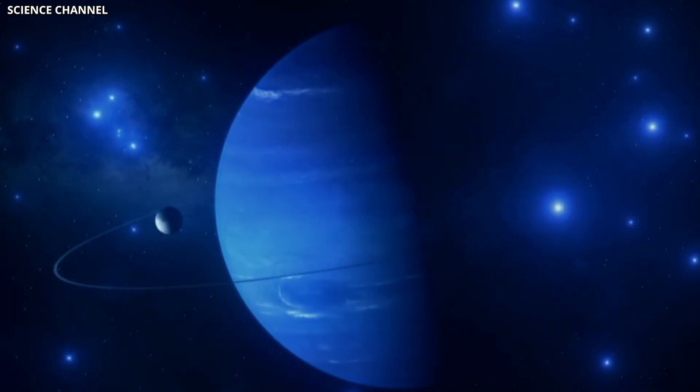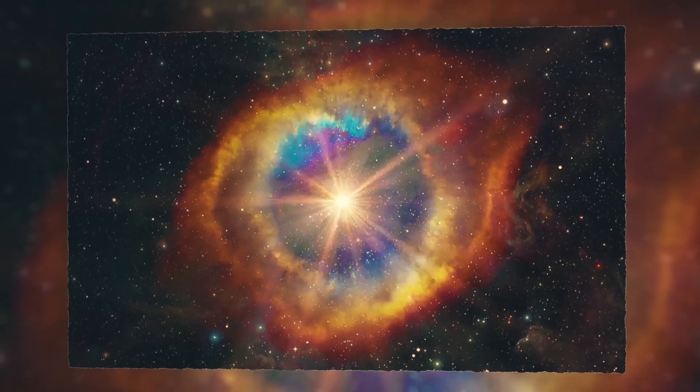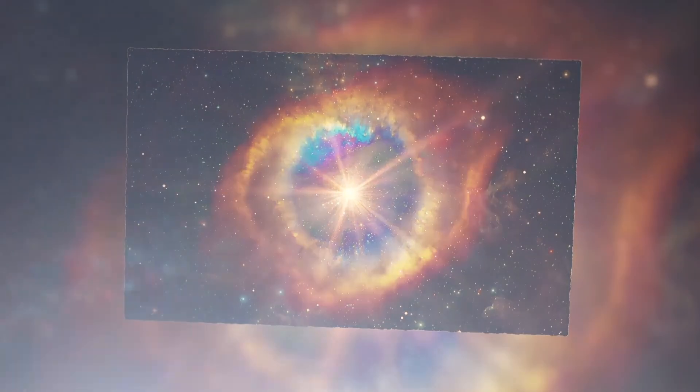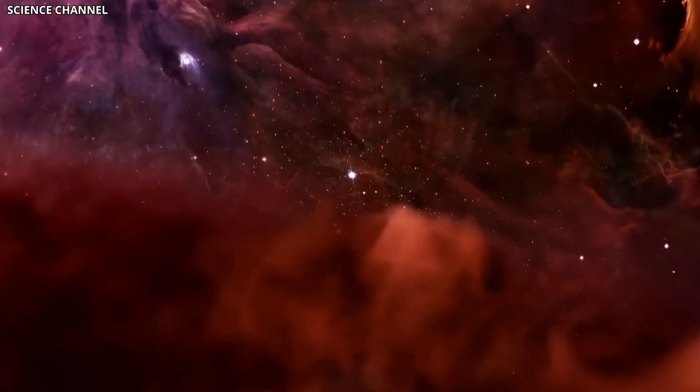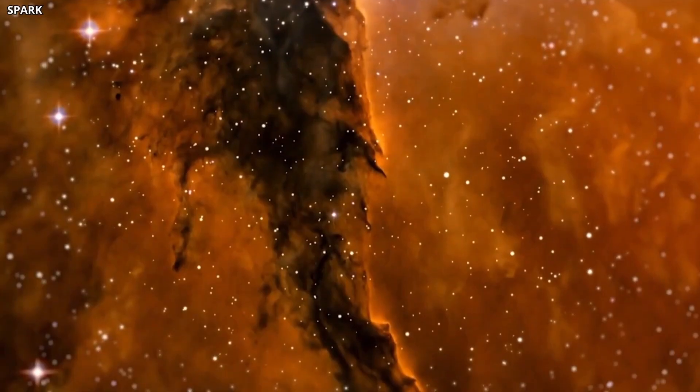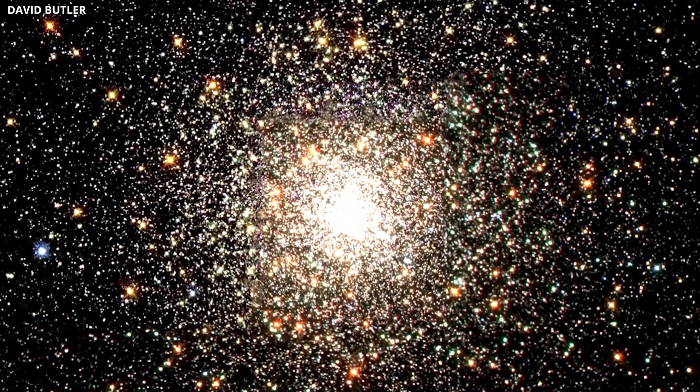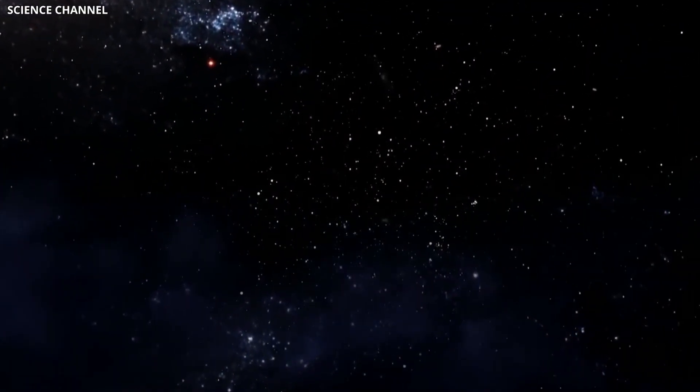Scientists believe the local hot bubble formed approximately 14.4 million years ago, when around 15 massive nearby stars exploded as supernovae. These kinds of clustered supernova events aren't unheard of in the galaxy. Stars are almost always born in clumps, with a single molecular cloud producing hundreds or even thousands of stars in a single go.